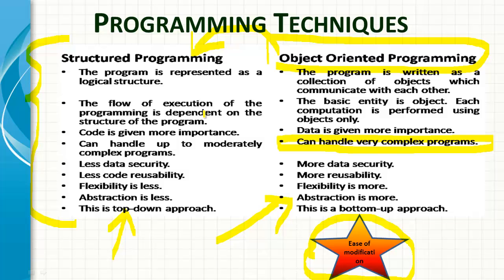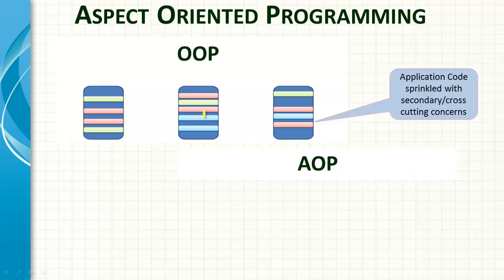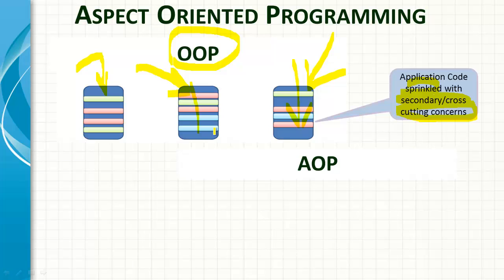Let's see the difference between OOP and AOP. In OOP, everything is a class and these contain all the application code. The problem is that application code gets sprinkled with secondary and cross-cutting concerns. There are two types of concerns: the primary concern, which is your core business logic, and secondary concerns. For example in a banking domain, doing a payment is your primary concern, while adding security, transaction management, logging, and auditing on top of it are all secondary concerns — also called cross-cutting concerns.